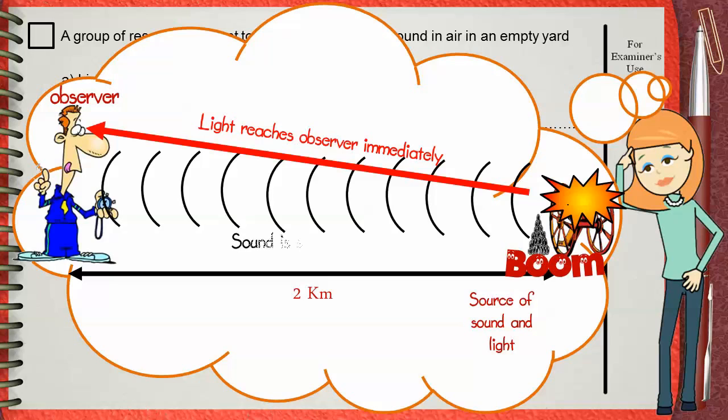Once the observer sees the flash, he starts the stopwatch. Later when he hears the sound of the shot, he stops the stopwatch. This recorded time will be the time taken by the sound from the shooter to the observer.